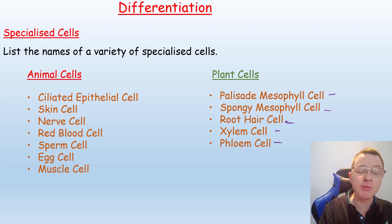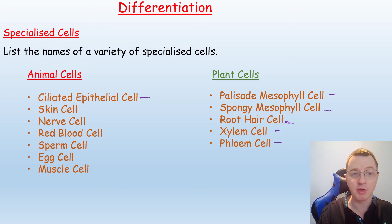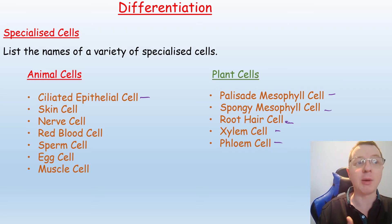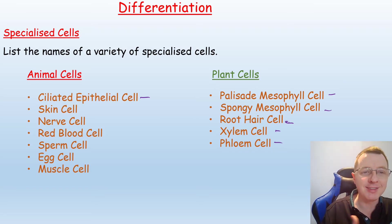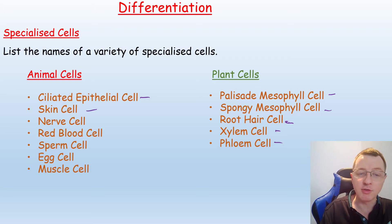We also have a number of different specialised cells for animals. We've got the ciliated epithelial cells, found in the trachea and the bronchioles, which have hair-like cilia to waft and remove mucus from the lungs — the mucus will have trapped any dirt and bacteria, so that gets removed as well. We've got the skin cells, which act as a waterproof barrier and also as a barrier to any pathogens or microbes that might try to get into the body.